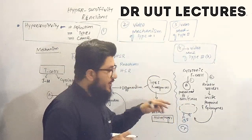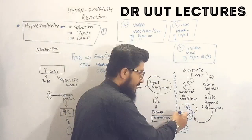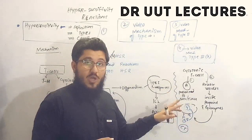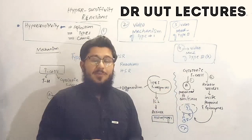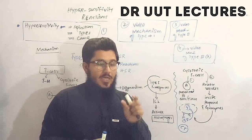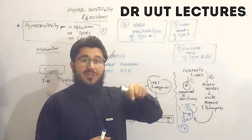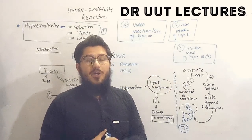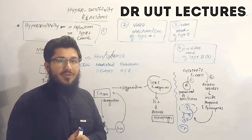Through these pores, the granzymes enter, and as they enter, they cause the destruction of those cells. This is how cytotoxic T cells cause tissue destruction. A very common example is in diabetes: the beta cells responsible for insulin production are destroyed by these cytotoxic reactions. Another common example of type 4 hypersensitivity is dermatitis.